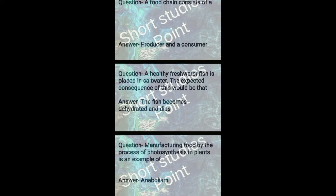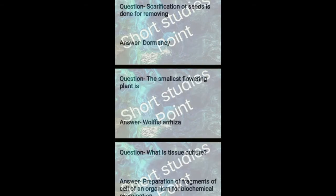Question: Manufacturing food by the process of photosynthesis in the plant is an example of? Answer: Anabolism. Question: Scarification of seeds is done for removing? Answer: Dormancy. Next question: The smallest flowering plant is? Answer: Wolffia arrhiza.